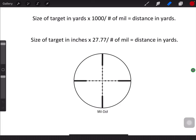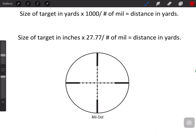Here are a couple of the equations you will need. If you are measuring your target in yards, let's say a military-aged male that measures at six feet, that would equate to two yards. That's what I mean by size of target in yards.